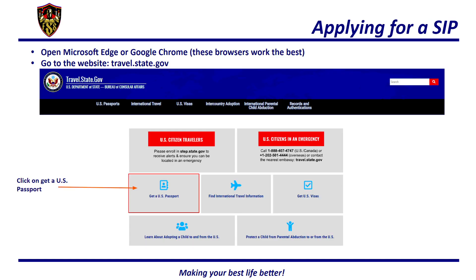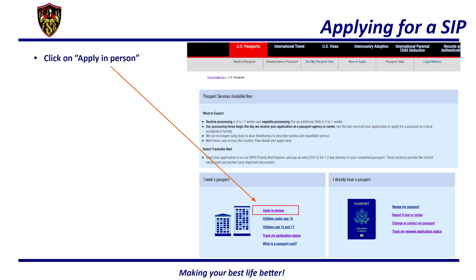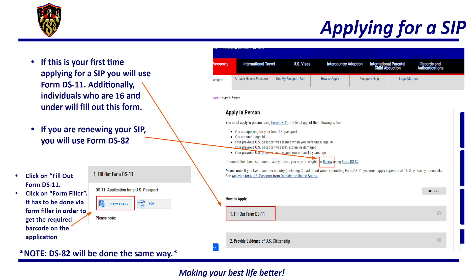So how do you apply for a SIP? First, open Microsoft Edge or Google Chrome as these browsers work the best. Then in the search engine, type in travel.state.gov. The picture below is what the main screen will look like. Click on Get a US Passport. On the next screen you have a lot of different options — you will need to click on Apply in Person. If this is your first time applying for a SIP, you will use Form DS-11.